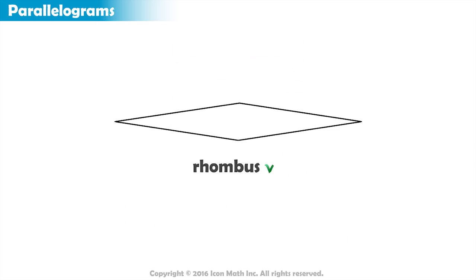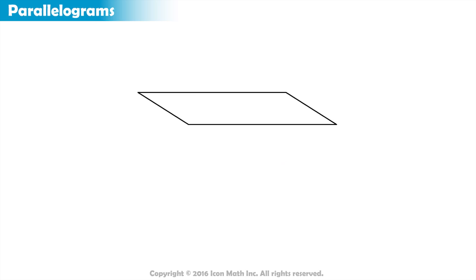This shape here is a rhombus, while this shape here is a parallelogram, but it is not a rhombus because its sides are not equal. Also, it is not a rectangle because its angles are not right angles.